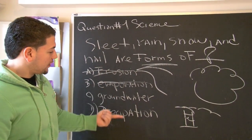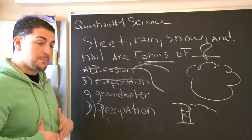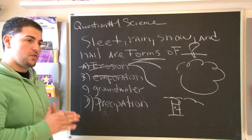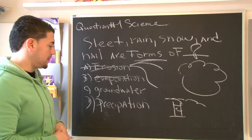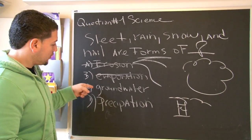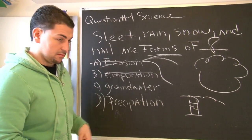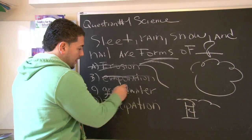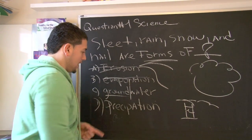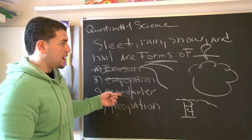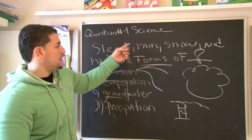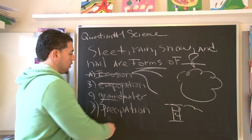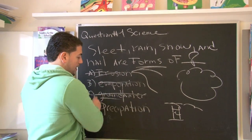So now we're left with the 50-50, my favorite situation, because you've got two possible choices. Now let's look at C — it says groundwater. Context clues tell us right there: ground. How can ground and sleet, rain, snow, and hail have anything in common? So we know that this is out.